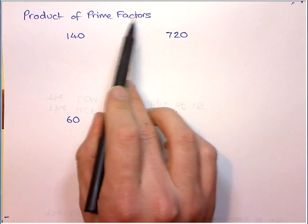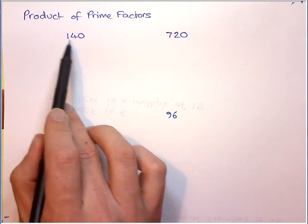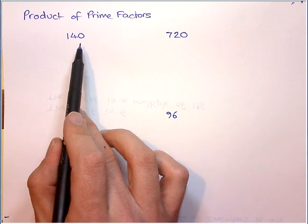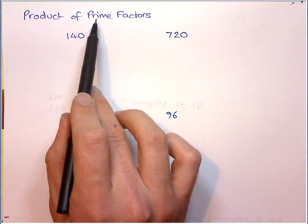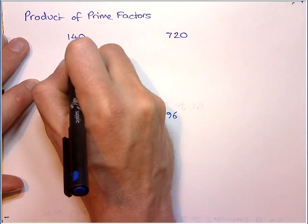So factors are when we think of two numbers and multiply together to make a number, for example 14 times 10. But what we've got to do is keep writing it only using prime numbers. So we do this using what we call a prime factor tree.